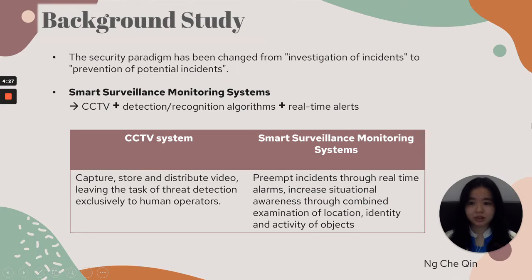Nowadays, the security paradigm has been changed from investigation of incidents to prevention of potential incidents. A Smart Surveillance Monitoring System is the combination of CCTV and detection or recognition algorithms with real-time alerts, unlike CCTV systems which can only capture, store, and distribute video while leaving the task of threat detection to human operators. The Smart Surveillance Monitoring System is able to prevent incidents through real-time alarms and increase situational awareness through combined examination of location, identity, and activity of objects.